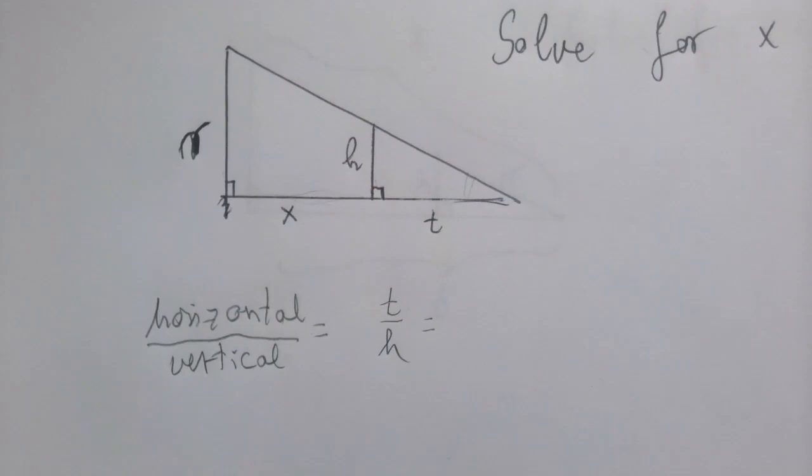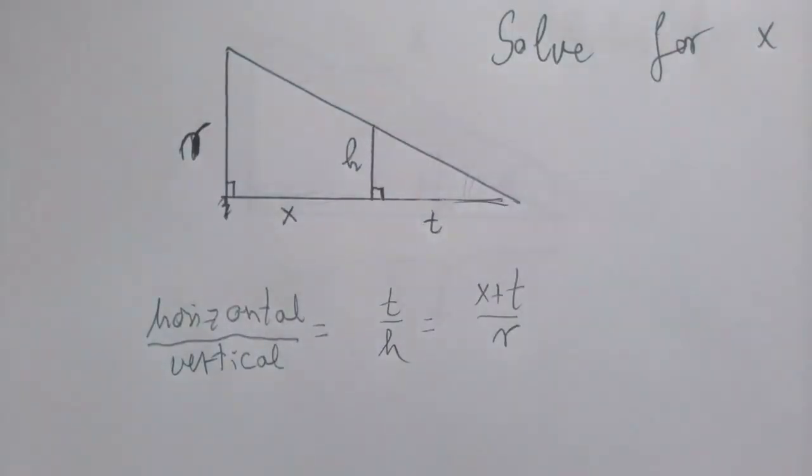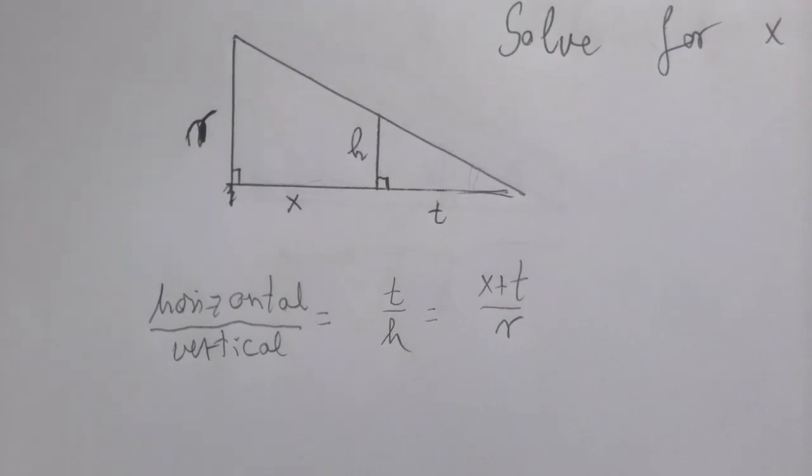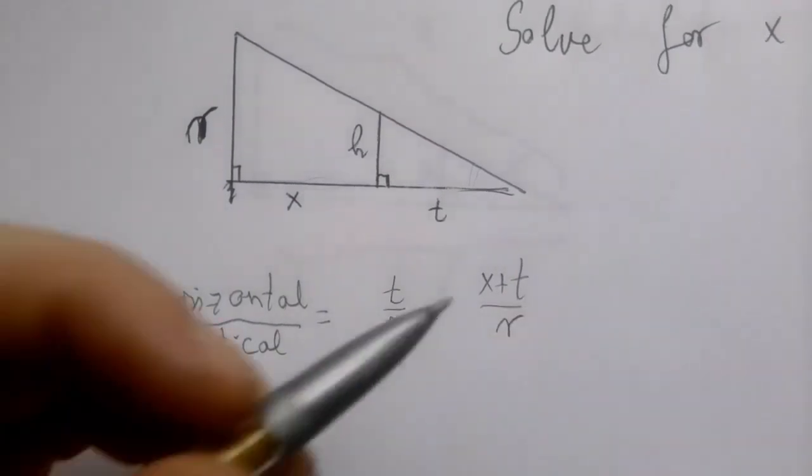And in the bigger triangle, it is X plus T over R. And now the geometry problem is over, we just have this formula that we need to solve for X.